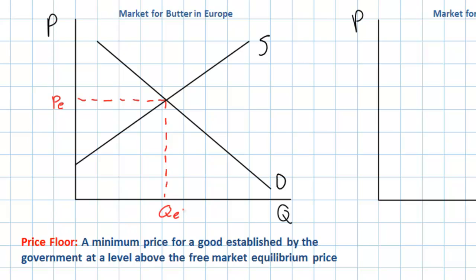Now, why would a government wish to impose a price floor? A price floor is a minimum price set above equilibrium. This implies that a price floor is meant to help the producers of a good.